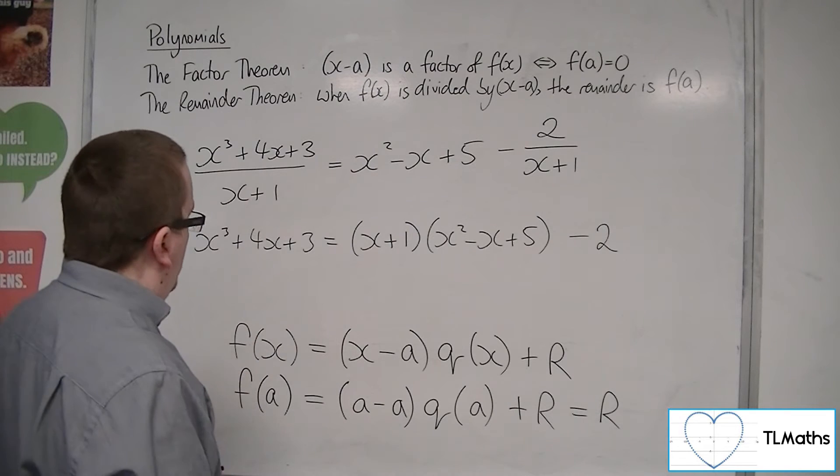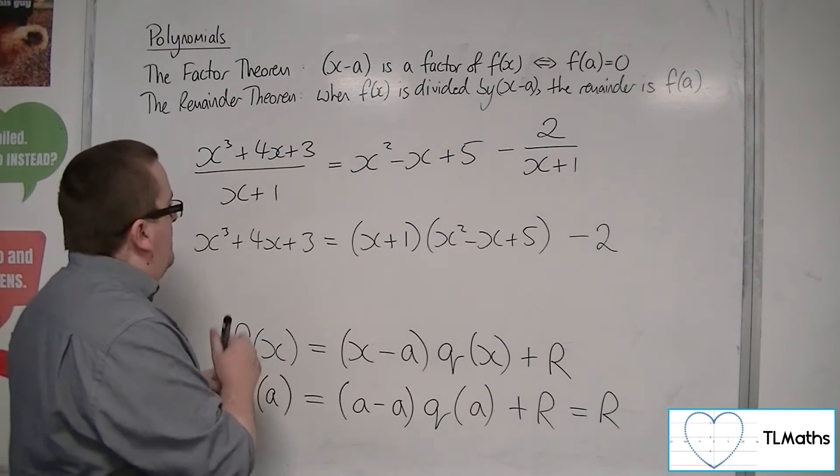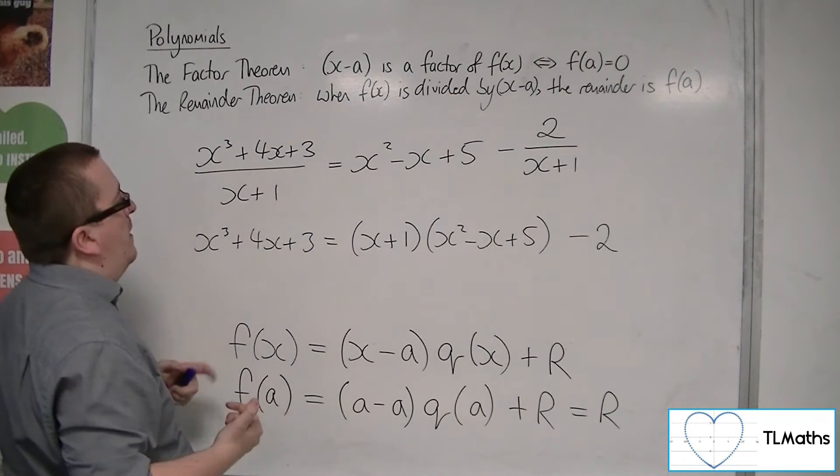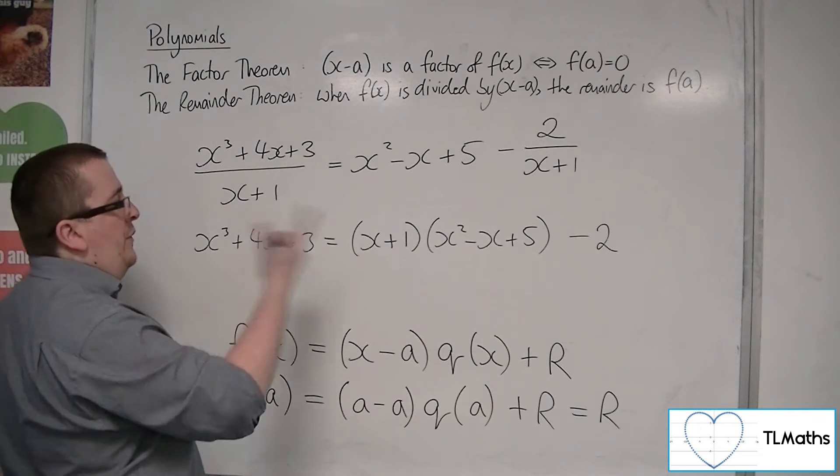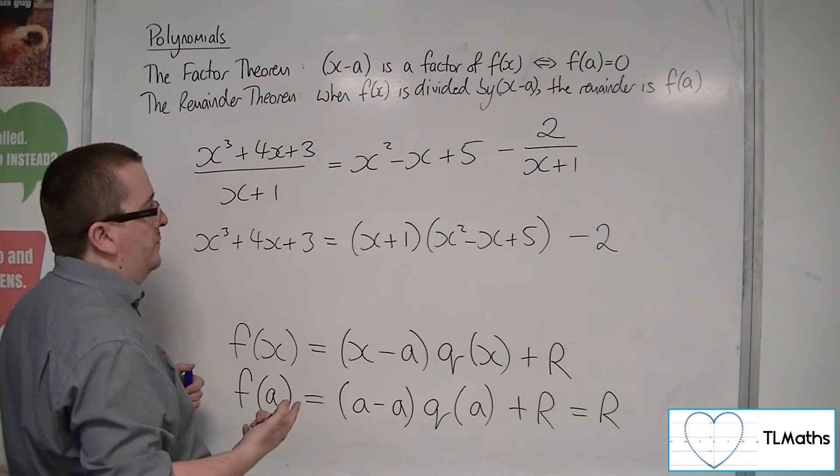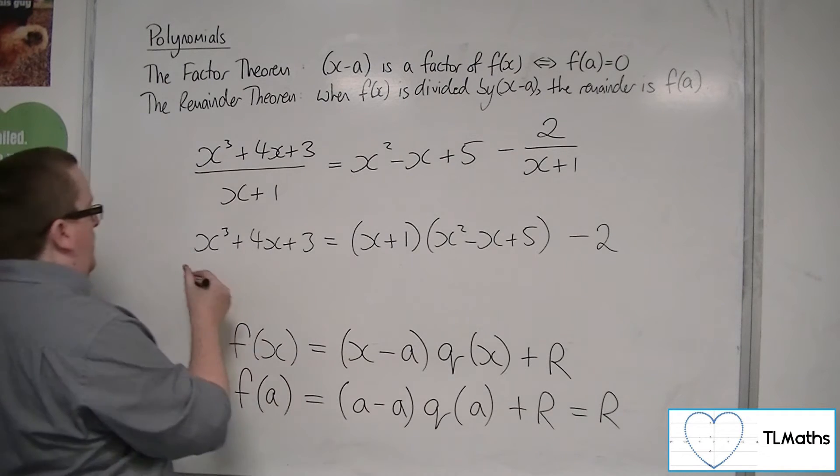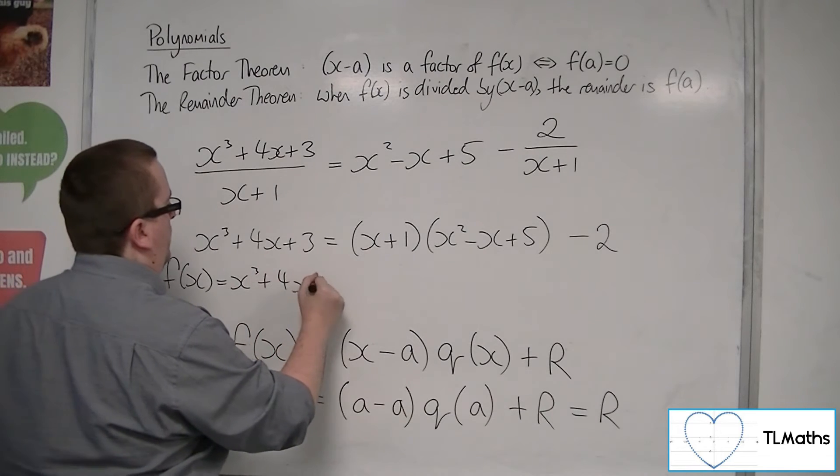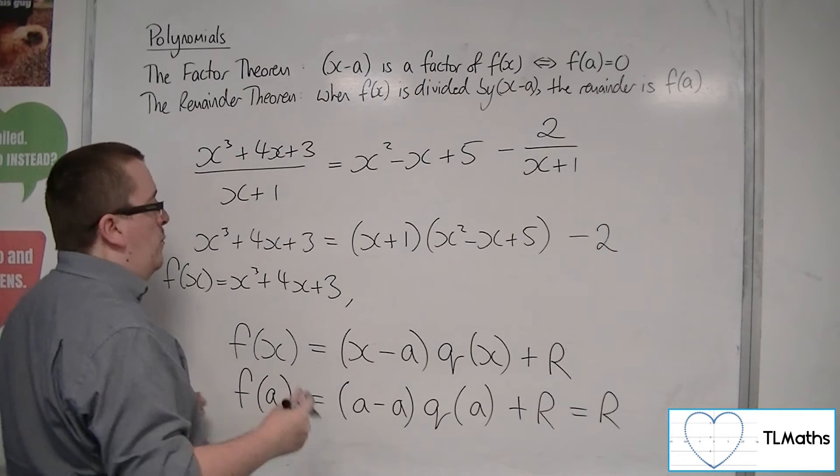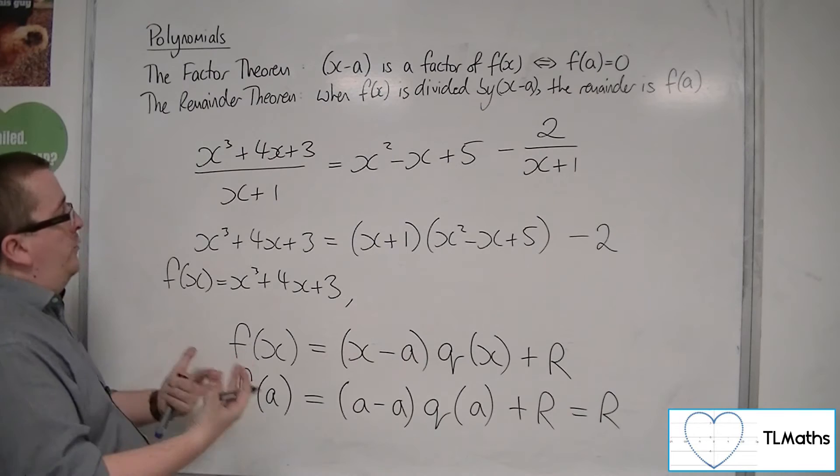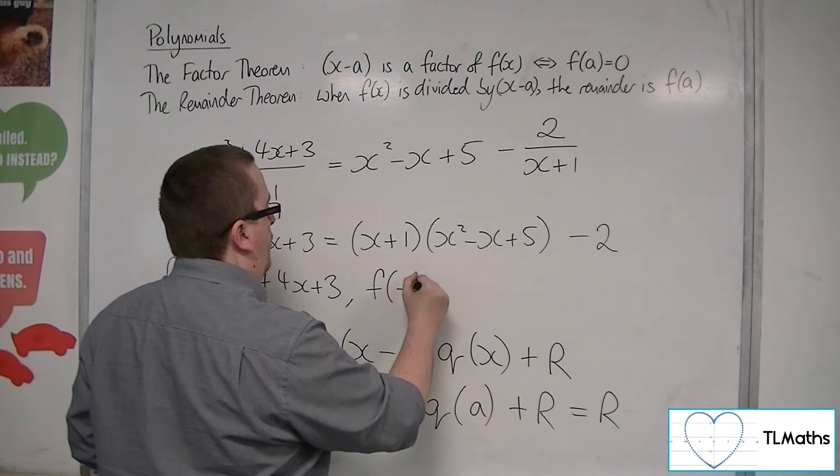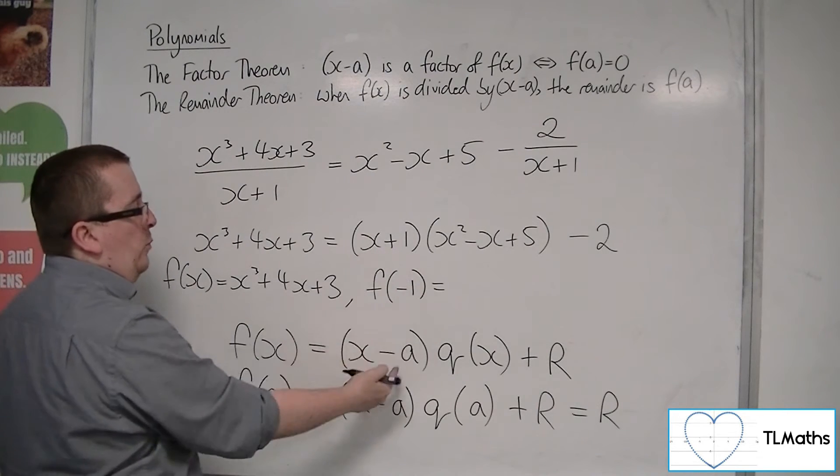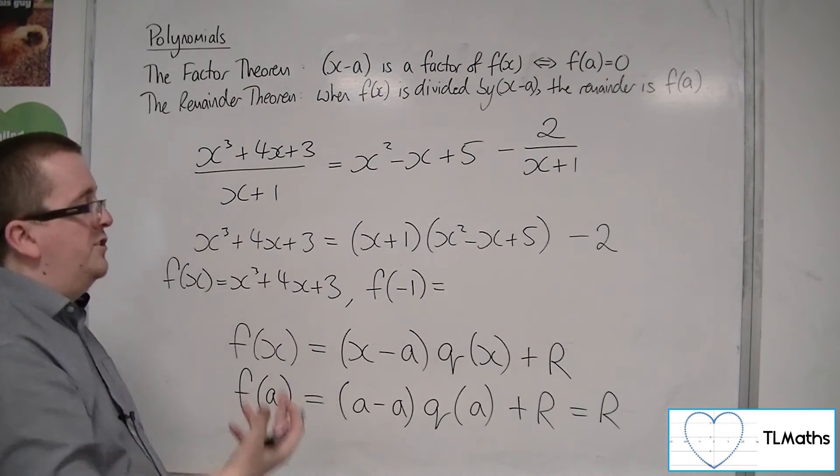So in other words, that means that when I divide x cubed plus 4x plus 3 by x plus 1, I get this remainder of minus 2. And I could have calculated it by saying, well, if f of x is the x cubed plus 4x plus 3, then when I divide by x plus 1, the remainder will just be f of minus 1. Notice the sign change here. x minus a, x plus 1. So there's the sign change. The a's got to be minus 1.